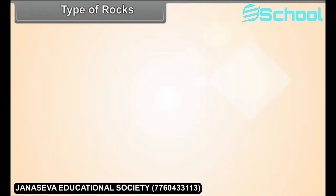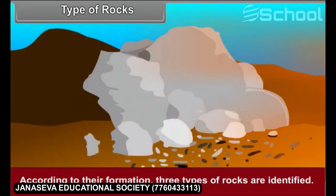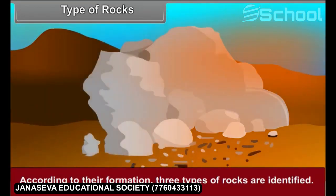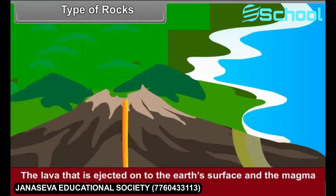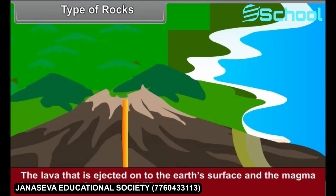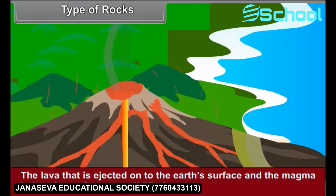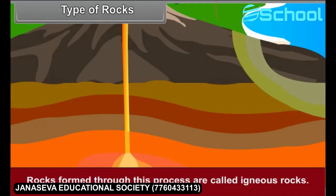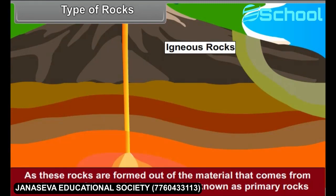According to their formation, three types of rocks are identified. The first type is igneous rocks. The lava that is ejected onto the Earth's surface and the magma below the surface get solidified. Rocks formed through this process are called igneous rocks. As these rocks are formed out of the material that comes from the interior of the Earth, they are also known as primary rocks.